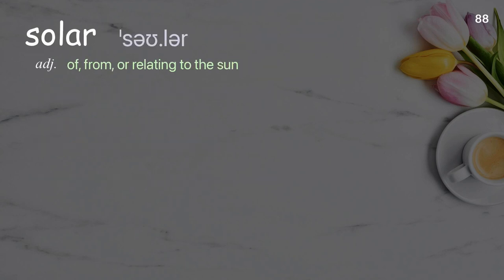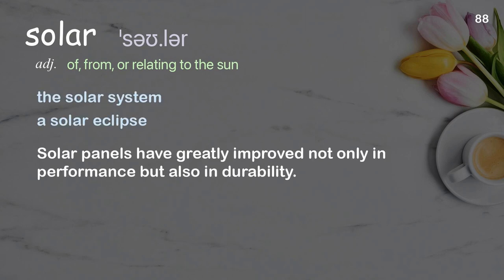Solar: of, from, or relating to the sun. Examples: the solar system, a solar eclipse. Solar panels have greatly improved not only in performance, but also in durability.